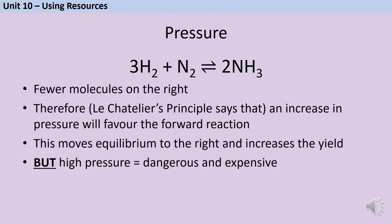In unit six you learnt that a reversible reaction can reach a point called equilibrium where the forward and backward reactions are happening at the same rate. In a closed system, Le Chatelier's principle tells us that if we make any change, the system will shift to try to counteract that change — so if we increase the pressure, the system will try to decrease it.